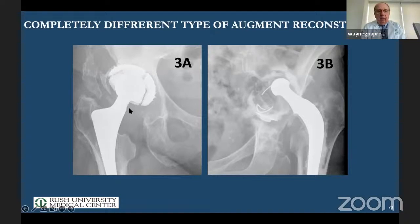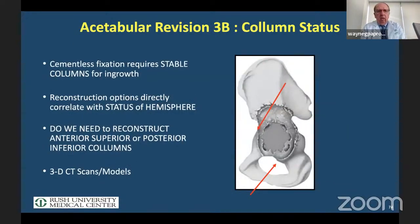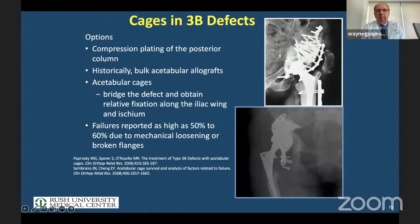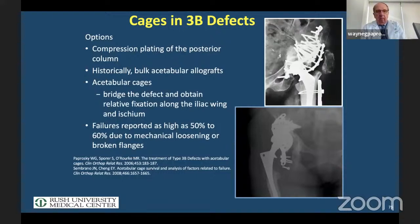I don't believe there's any indication for 3D custom devices in 3As, but for 3Bs it's dealer's choice. In any event, we have to be able to reconstruct the anterior superior wall — whatever is missing and non-supportive. These are cases I did over 23–24 years ago using plates, allograft, and cages — with a 50% failure rate, published in Clinical Orthopaedics about 20 years ago.